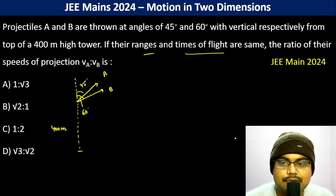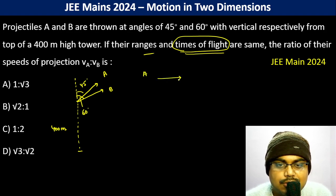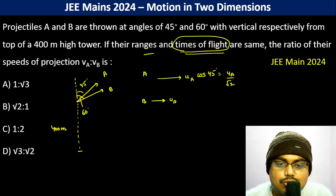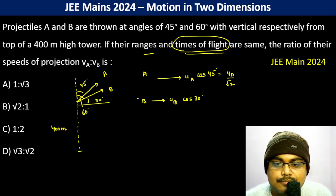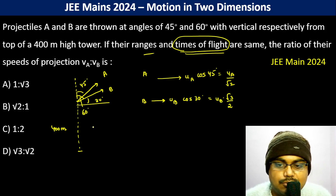Since the time of flight is the same, what's going to happen is: for A, the horizontal velocity component is uA·cos45° which is uA/√2. For B, the velocity in the horizontal direction is uB·cos30° — because the angle with the horizontal is 30° — which gives uB·√3/2.